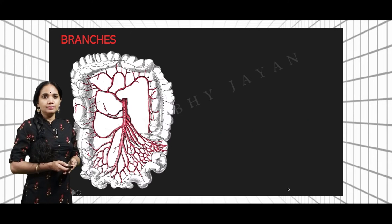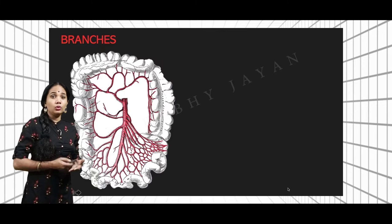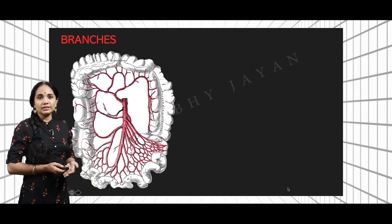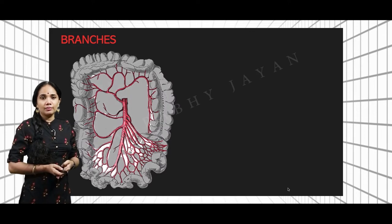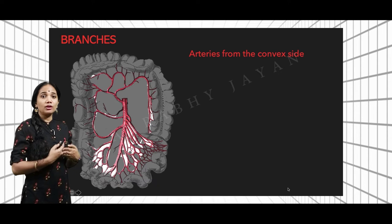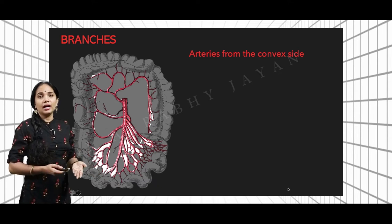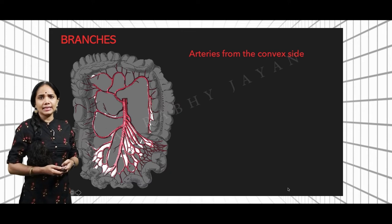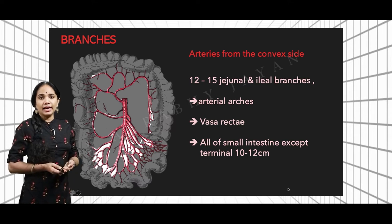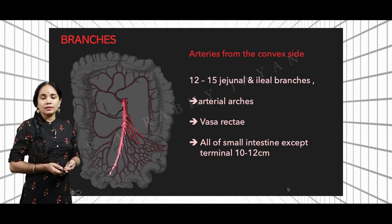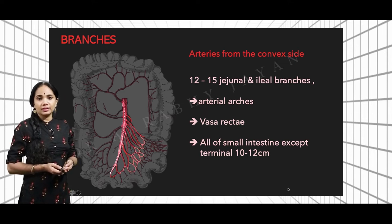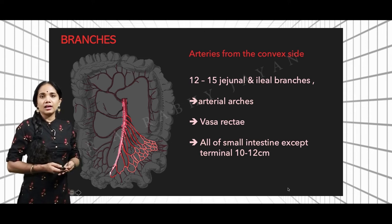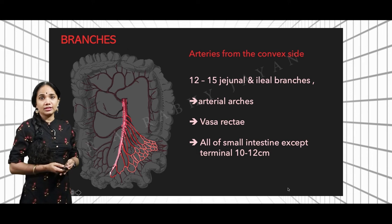Now let's look at the branches. We'll use a diagram from an older edition of Gray's, which beautifully shows the branches of the superior mesenteric artery. The branches can be classified as arteries coming from the convex side, which is the left side, and arteries coming from the concave side, which is the right side. The arteries on the convex side supply the small intestine — there are around 12 to 15 jejunal and ileal branches forming arterial arcades, and from these arcades, straight arteries called vasa rectae supply the small intestine.